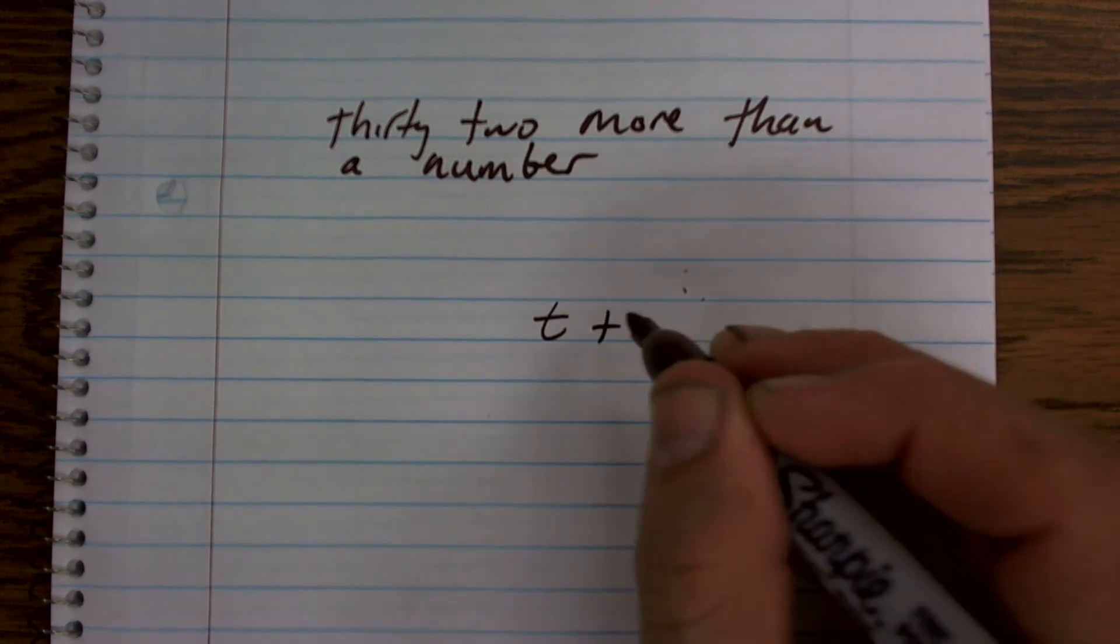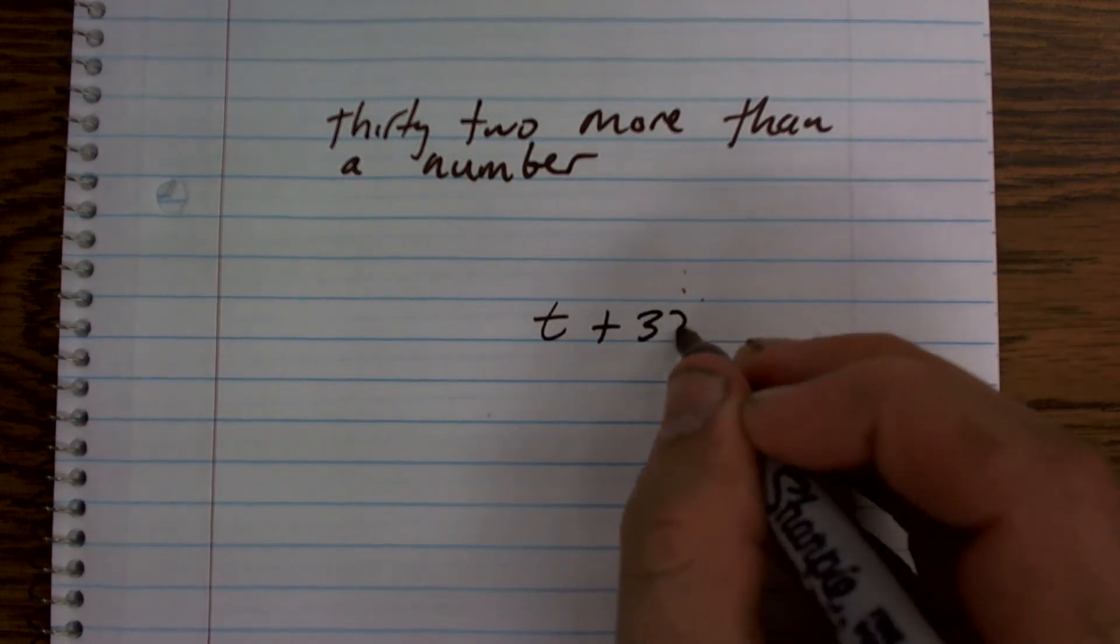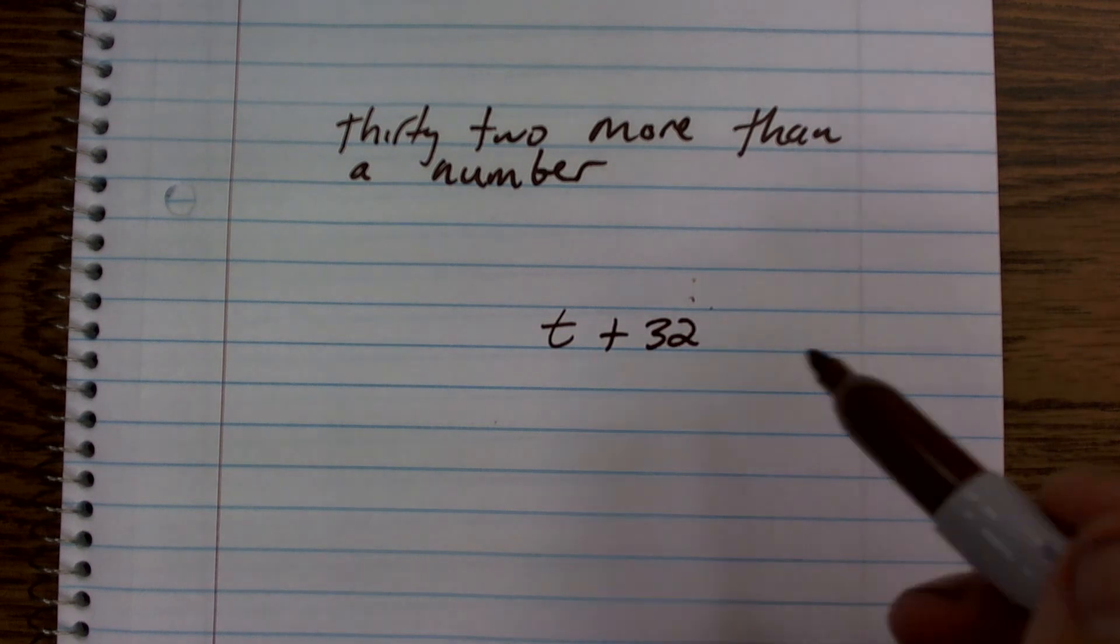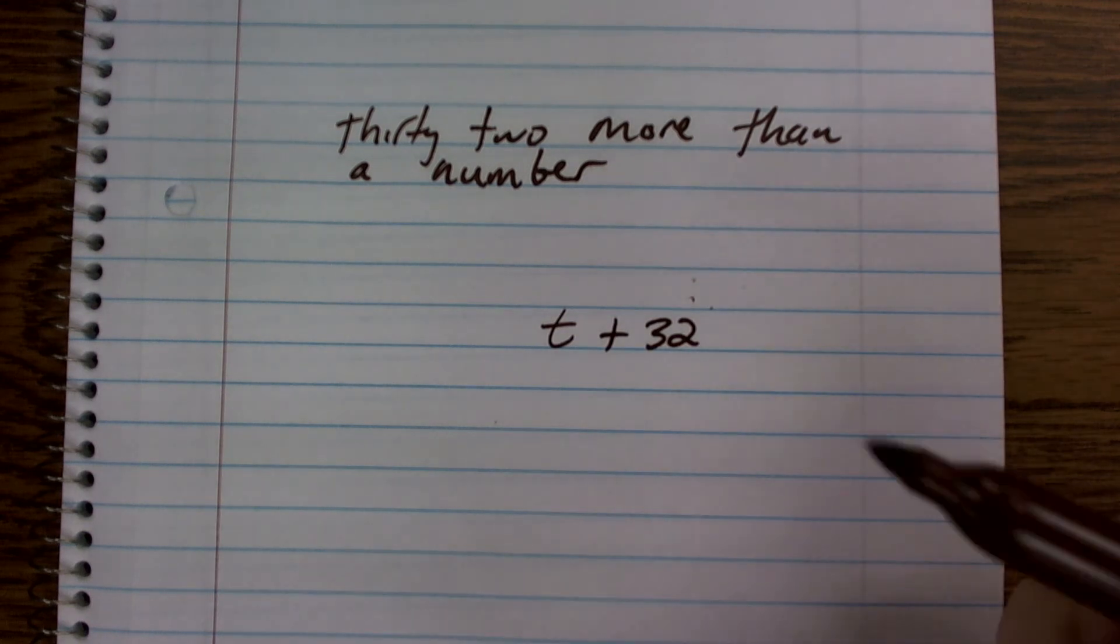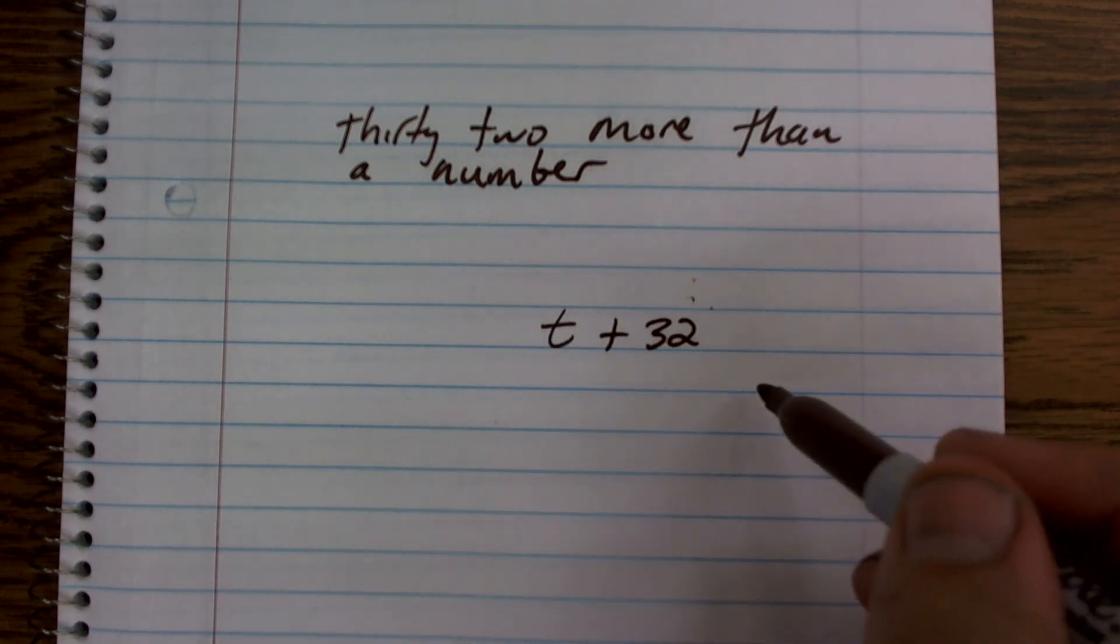So I'm going to take whatever my number is, and if I add 32, then it's just going to be 32 more than that number. And there you go, there's my algebraic expression.